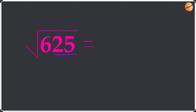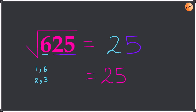The first thing we do is find the square root of 25, which is obviously 5 — so write the 5. Now we have to find the consecutive factors of 6. The factors of 6 are 1 and 6, and 2 and 3. The only consecutive pair is 2 and 3. We choose the smaller one, which is 2, and write it in front of the 5 to give us an answer of 25. So the square root of 625 is 25.